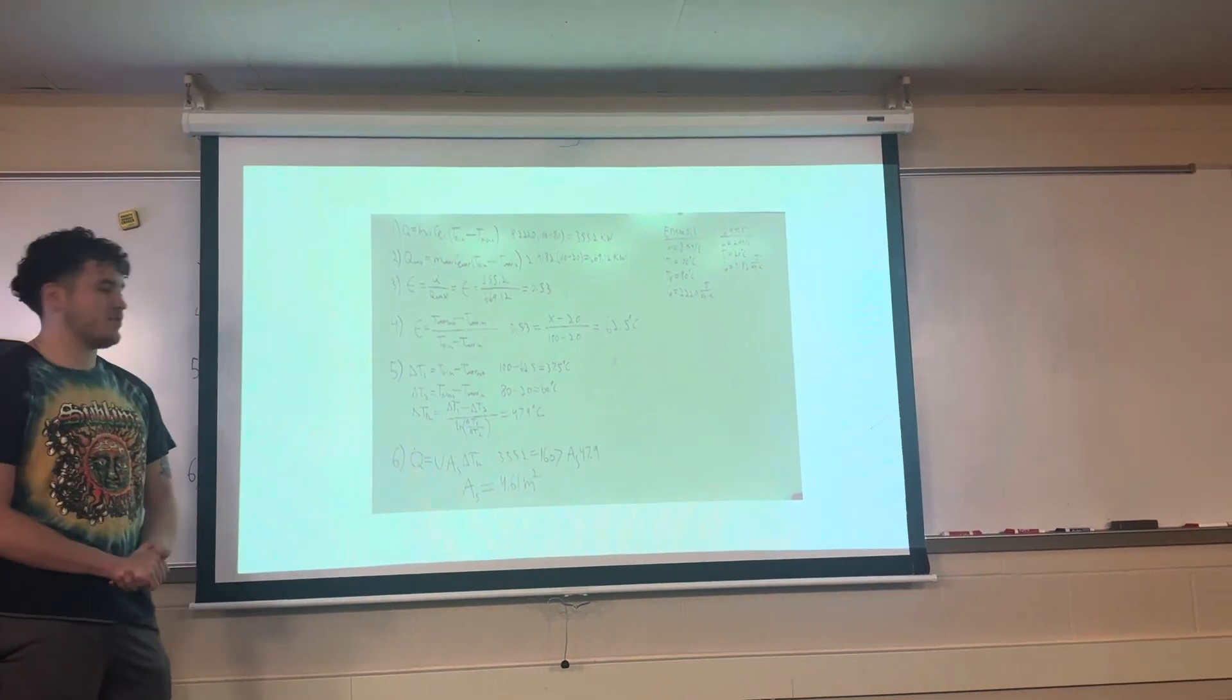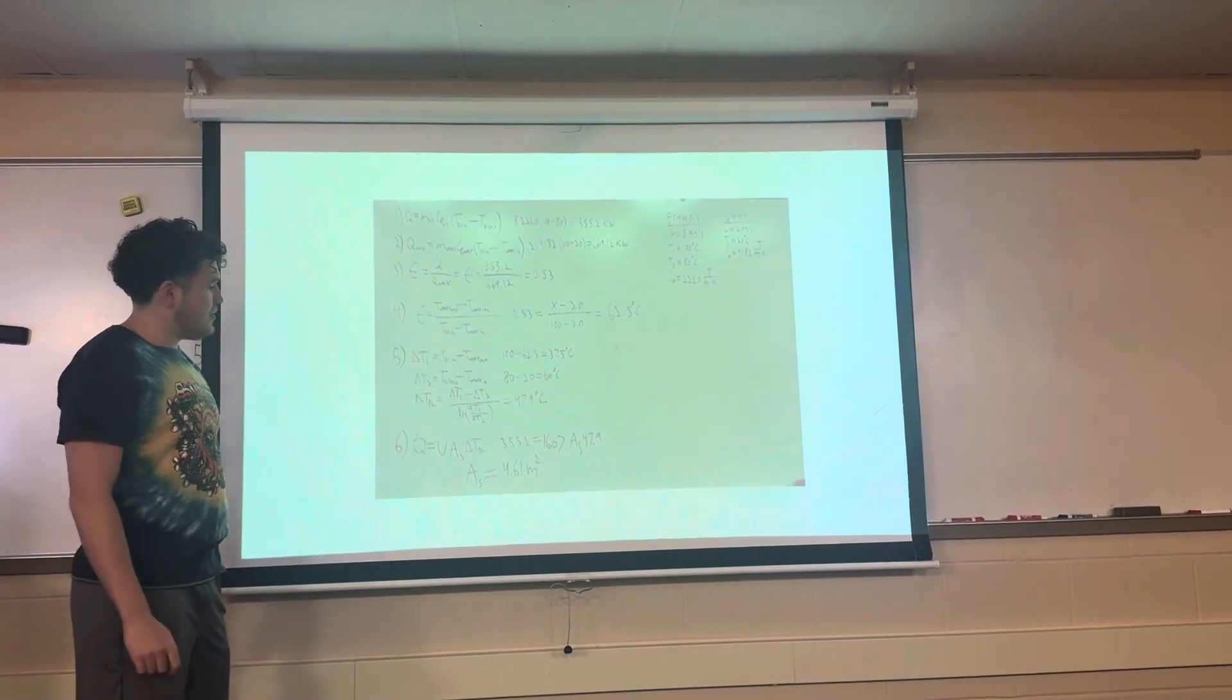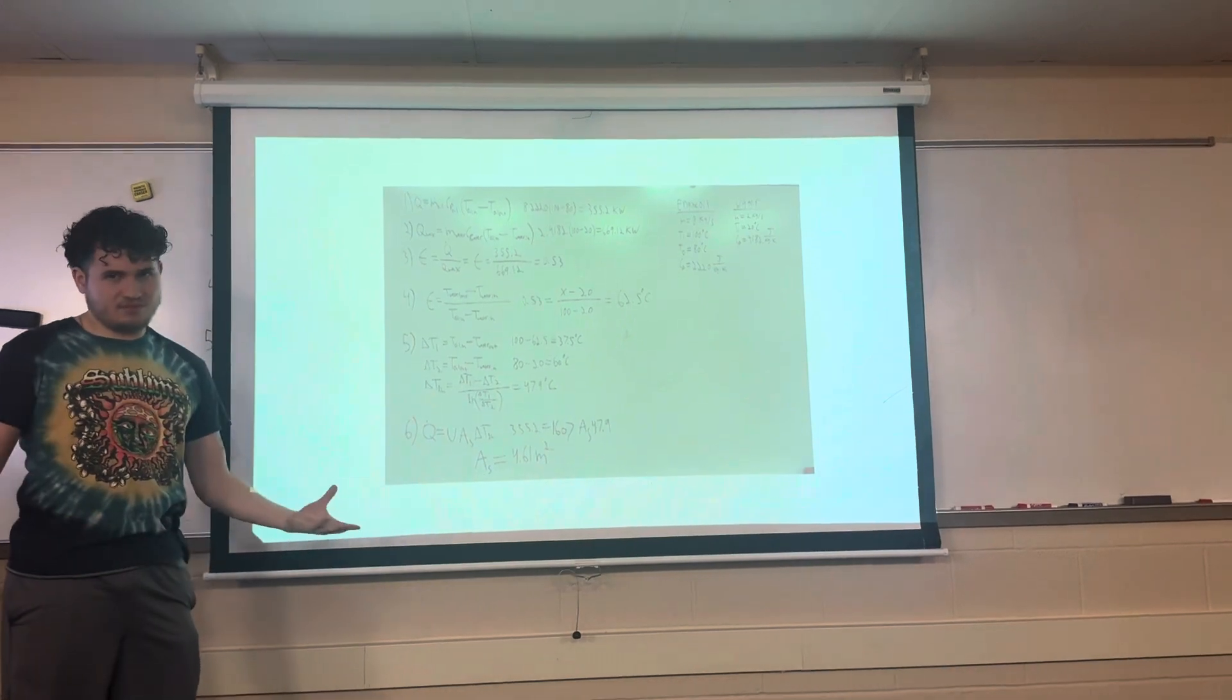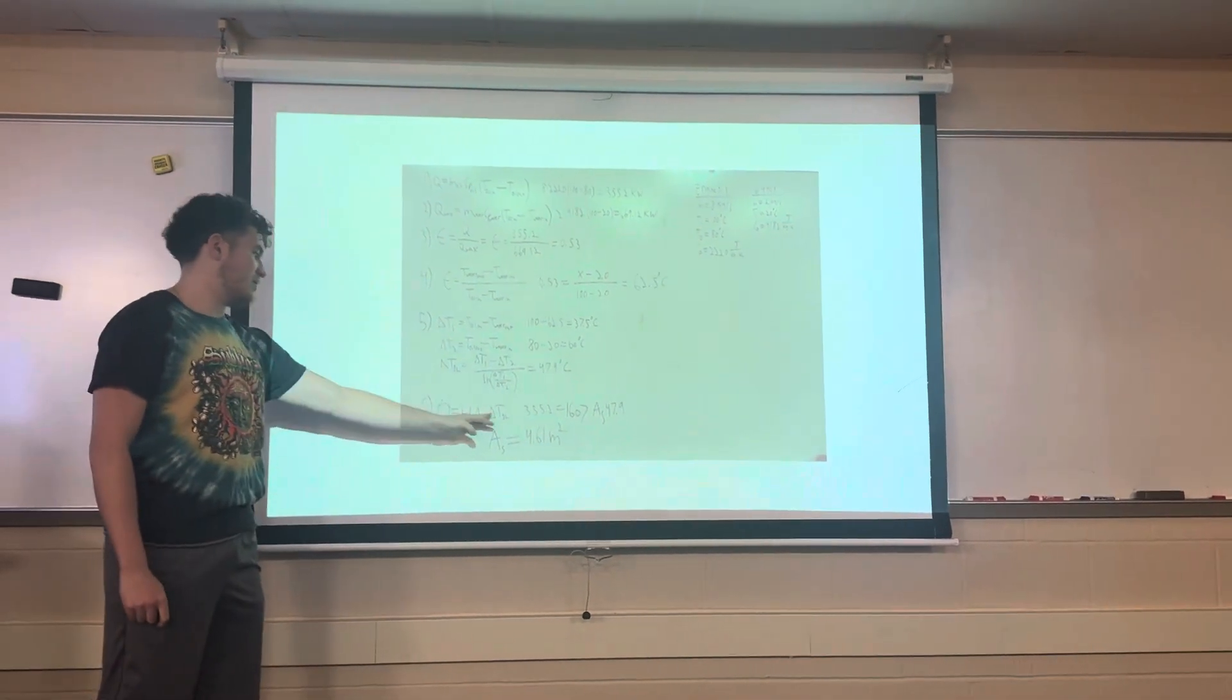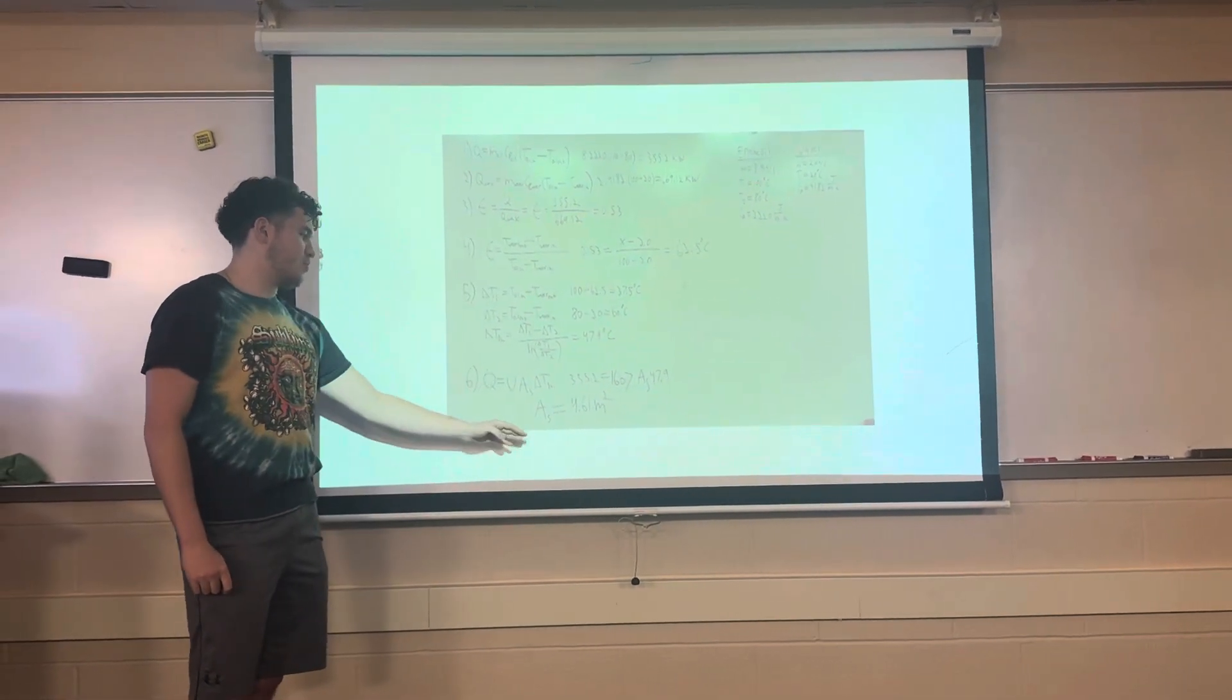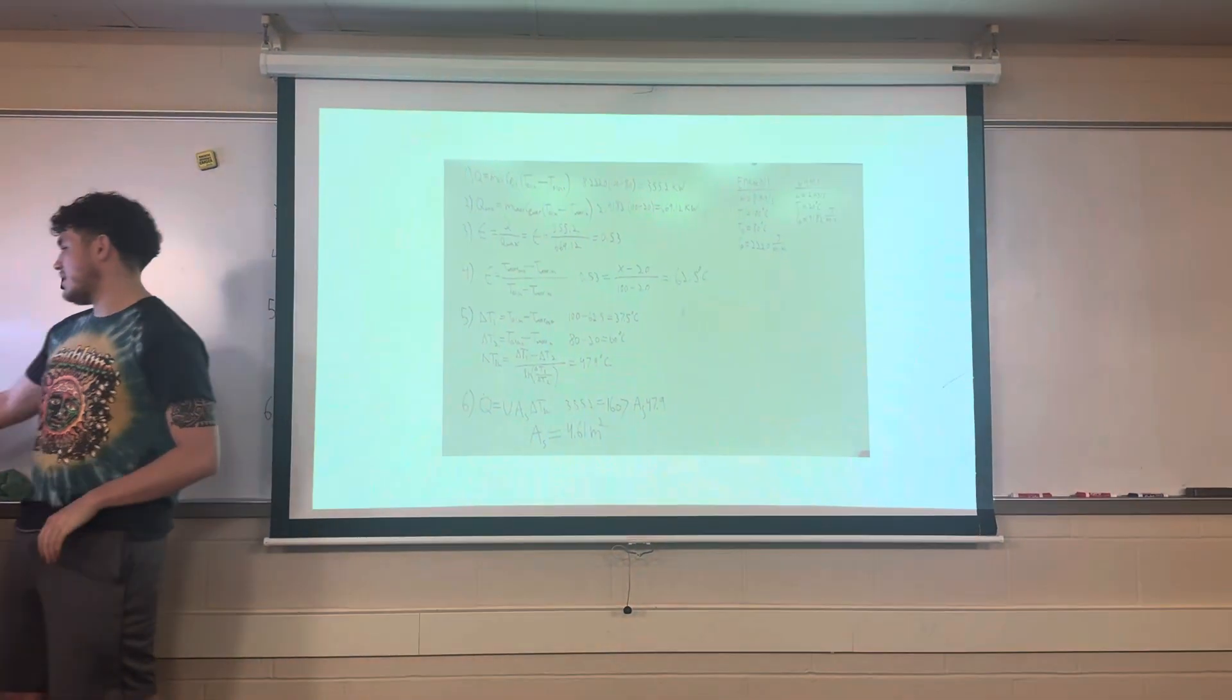Next, to solve for our surface area, we use our Q dot that was calculated, and our U that was given to us through birthday, the day and the month, multiplied by the log mean temperature difference. When we solve for the surface area, we end up with 4.61 meters squared for the heat exchanger surface area.